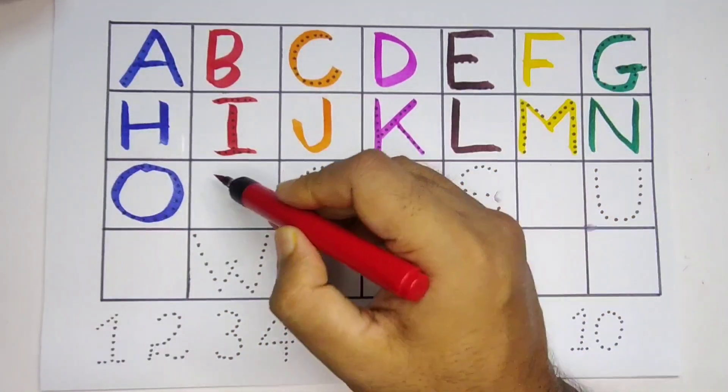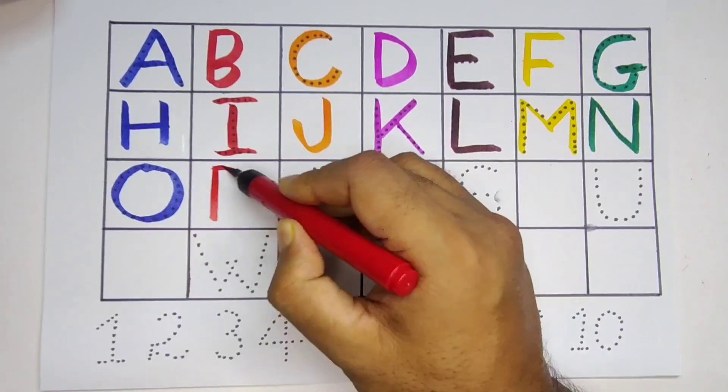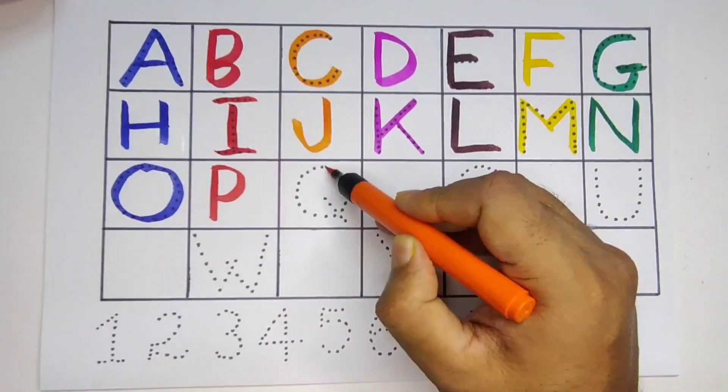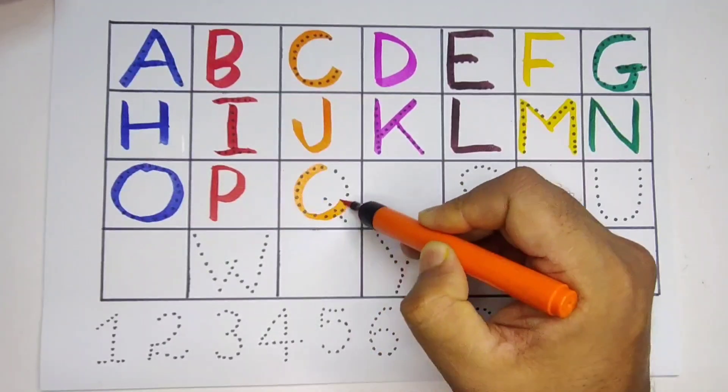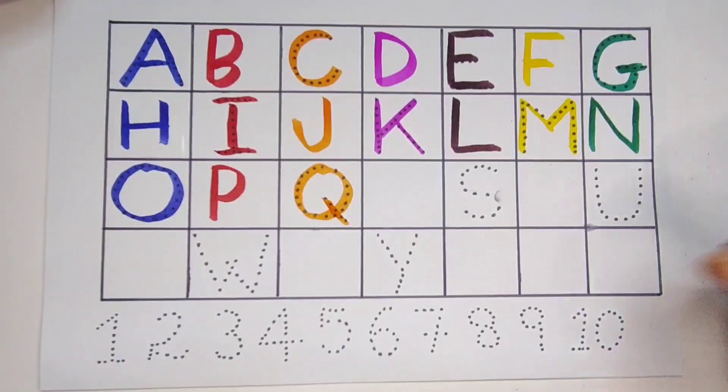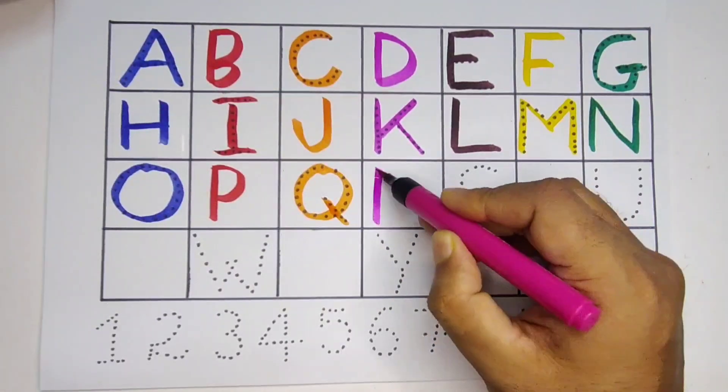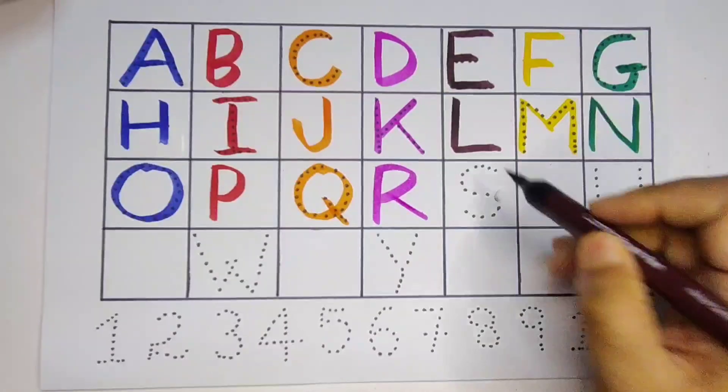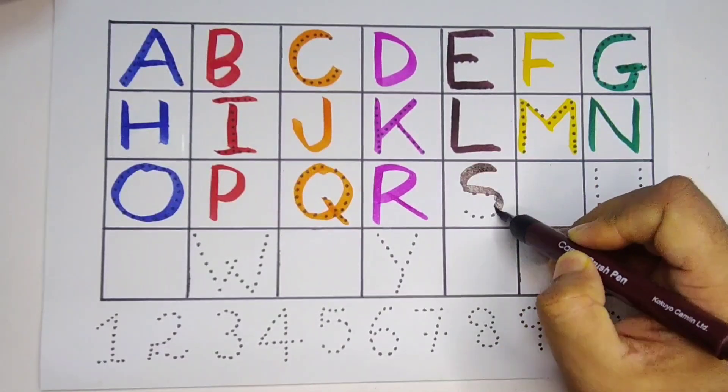Red color, P, P for parrot. Orange color, Q, Q for queen. Pink color, R, R for rat. Chocolate color, S, S for sun.